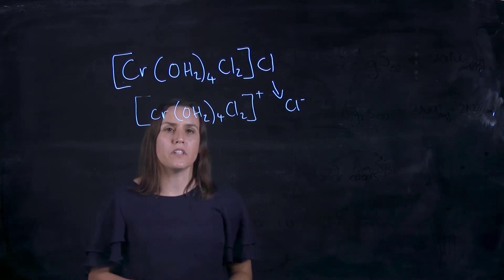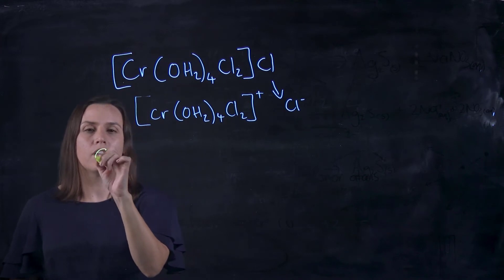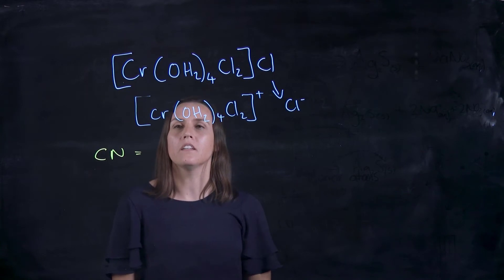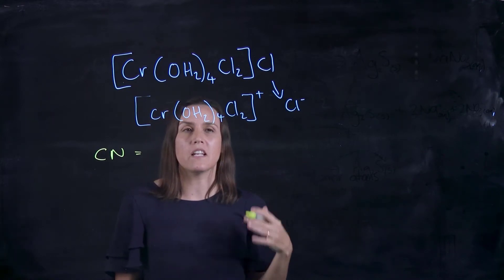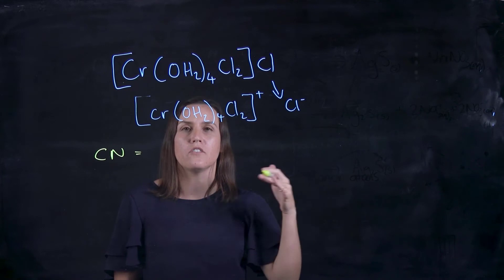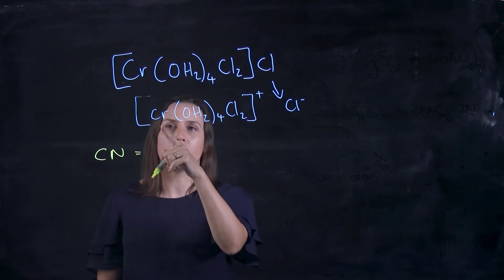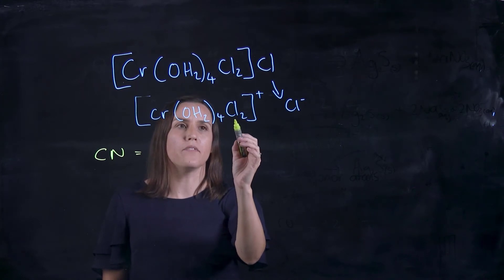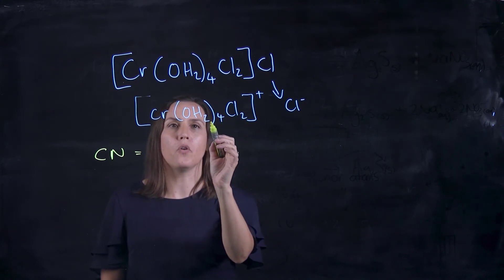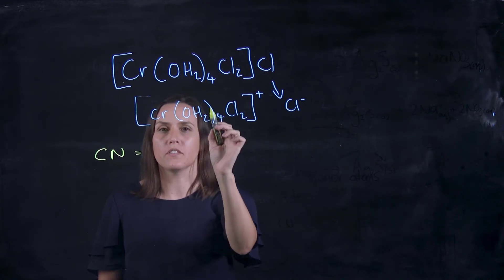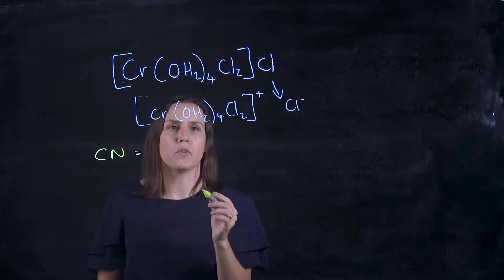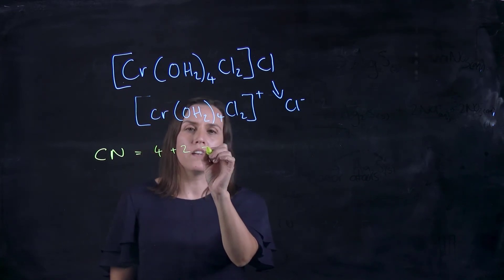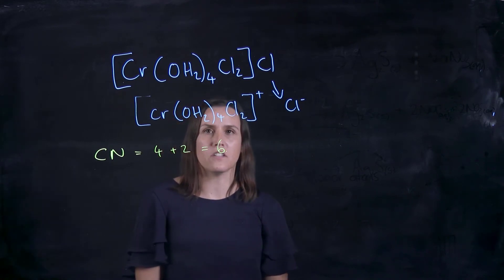Now to work out, first of all, the coordination number, I'll just put CN, but I mean coordination number with that abbreviation there. So the coordination number is the number of donor ligands that are donating towards that Cr metal. So we have two chlorines and we've got four OH2s. So we've got four waters that are within the compound. So we've got four for the water plus two for the chloride gives me six for the coordination number.